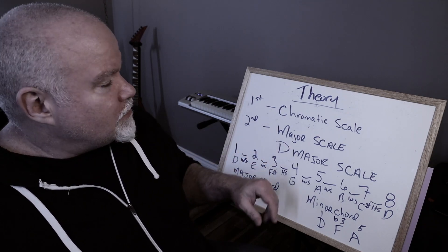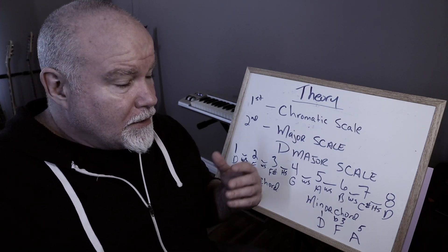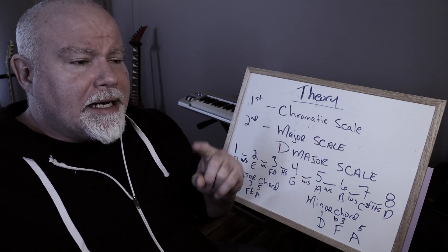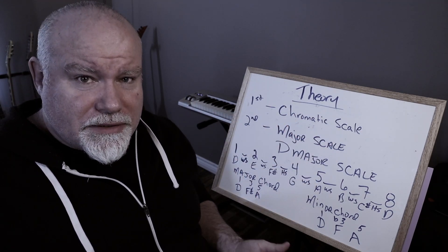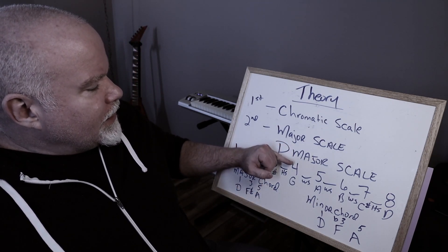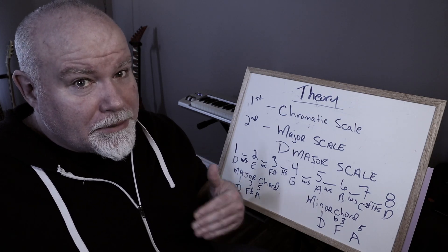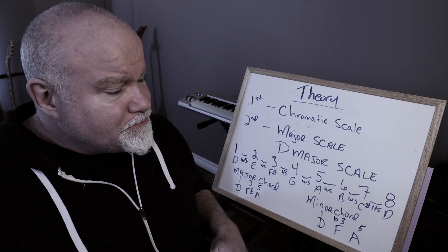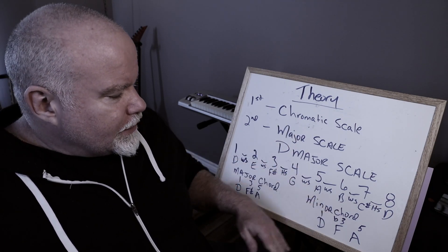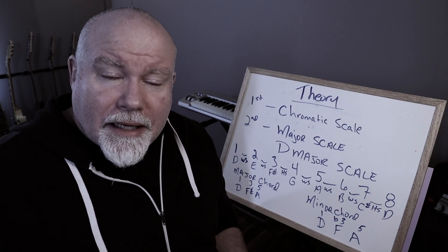After the chromatic scale, your next step is to learn the major scale — where it comes from, the formula: whole step, whole step, half step, whole step, whole step, whole step, half step. Whole steps and half steps can also be referred to as tones and semitones depending on who's teaching you. I'm providing a link to a video where I talk about the major scale in easy terms. If you're not sure about all that, please go there first and then come back here.